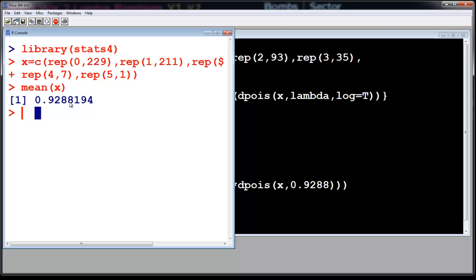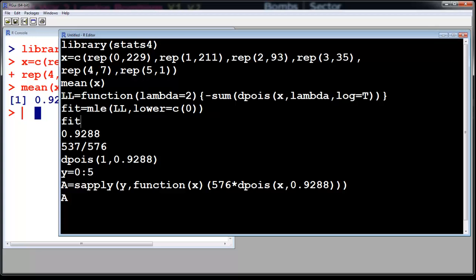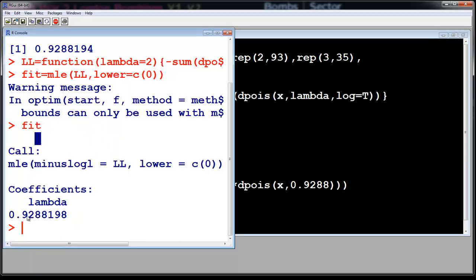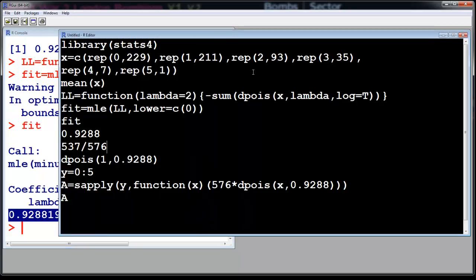For numerical estimation we are going to use the log likelihood function and then fit it. Let us run these three. You got the lambda as 0.9288198, so this is very close. You can use the average of the sample if you have forgotten what a Poisson distribution is.